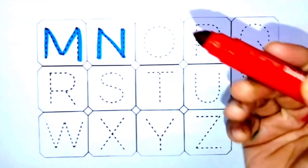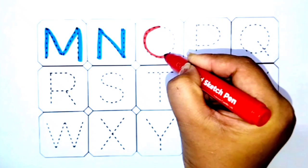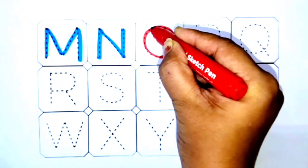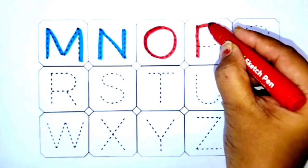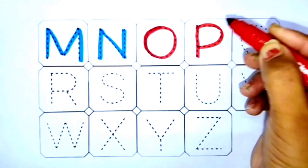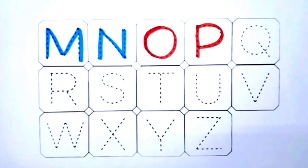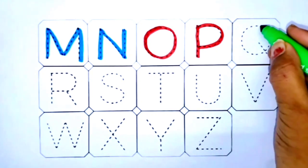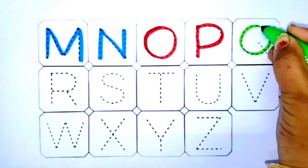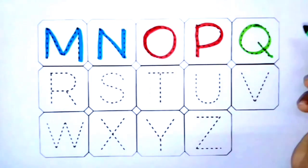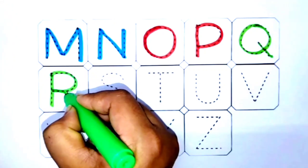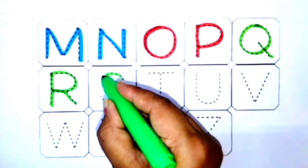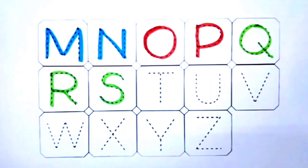Red color: O for orange, P for parrot. Green color: Q for queen, R for rabbit, S for sun. Black color.